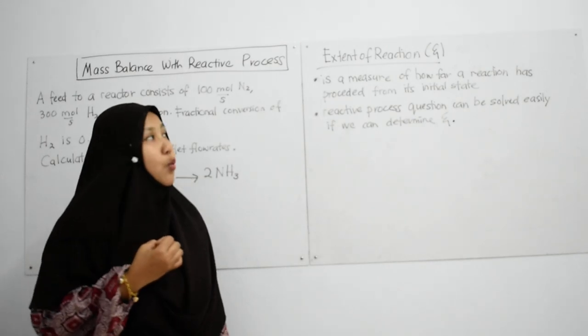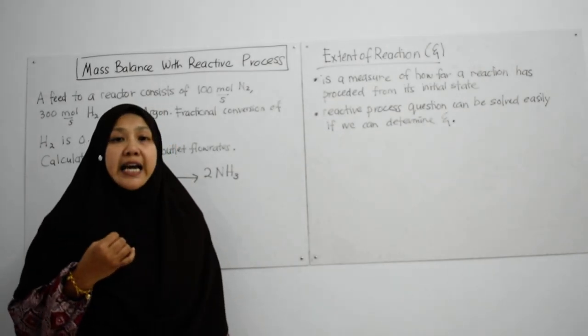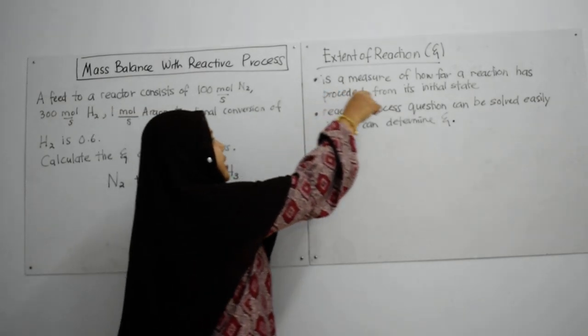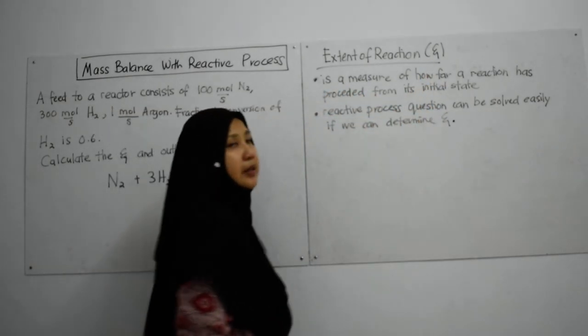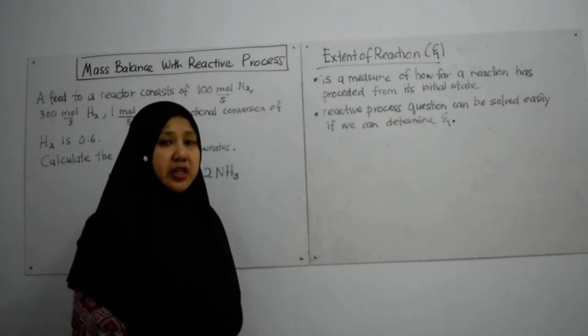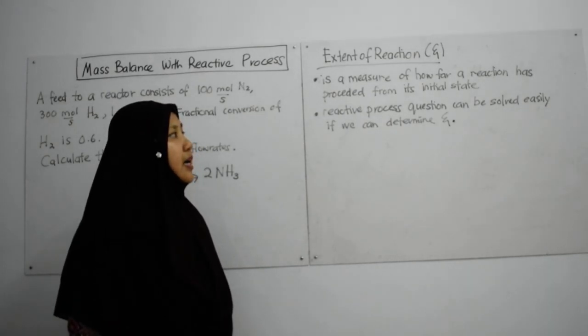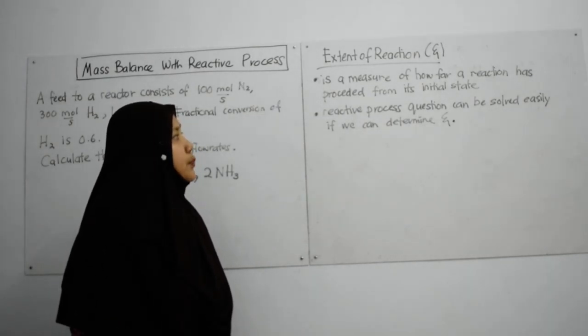Let's look. What is extent of reaction? Extent of reaction is given by this symbol. It is actually a measure of how far a reaction has proceeded from its initial state.